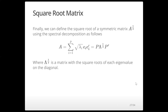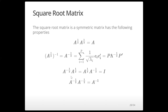Finally, we can define the square root of a symmetric matrix, A^(1/2), using spectral decomposition — instead of inverting the eigenvalues, we take their square roots: A^(1/2) = PΛ^(1/2)Pᵀ, where Λ^(1/2) is the diagonal matrix of square roots of eigenvalues. The square root matrix multiplied by itself recovers the original matrix. Its inverse is the inverse square root matrix, and the inverse square root times the square root equals identity.